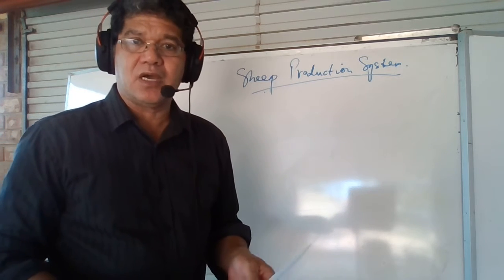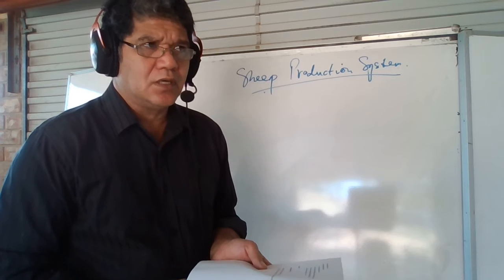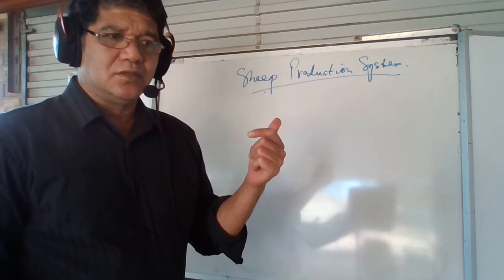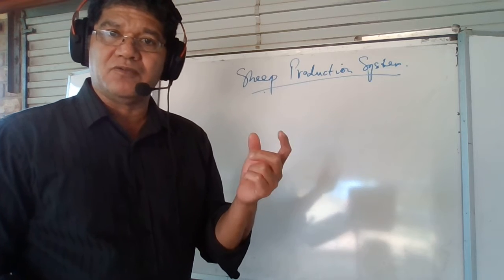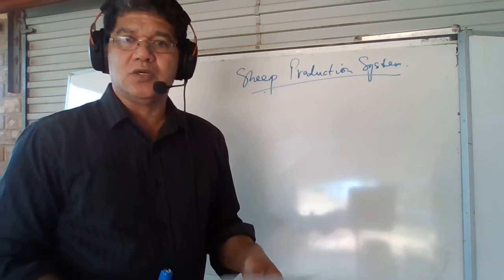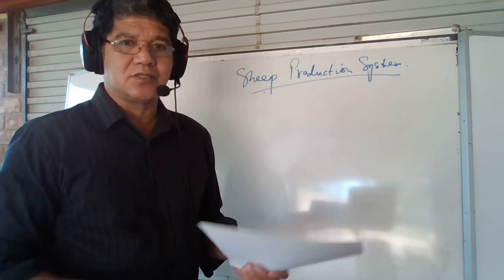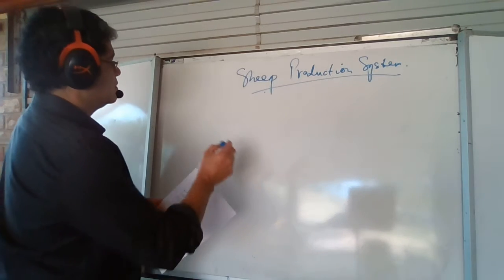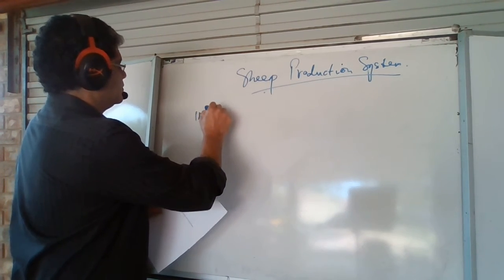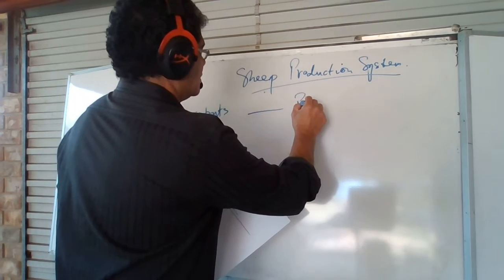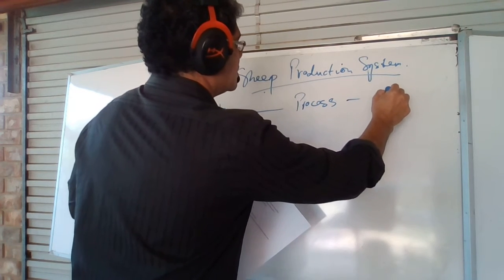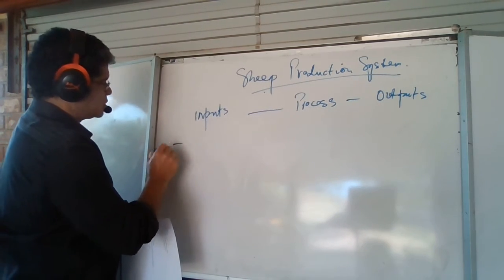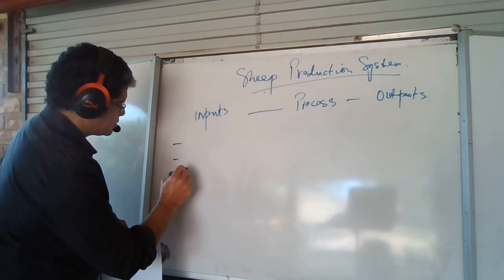I still have to tell you something about sheep — a little bit about the breeds. There are crossbreeding breeds that are good for meat, and some that are good for wool, so you just have to read them so you can understand how to manage them. If we go into the inputs, process and outputs, you can put here something like the sheep, and then in Australia you have shearing sheds.